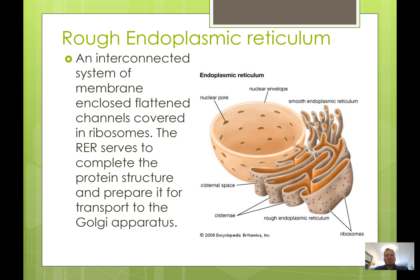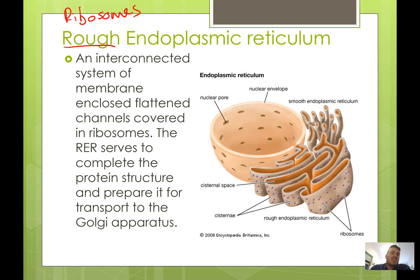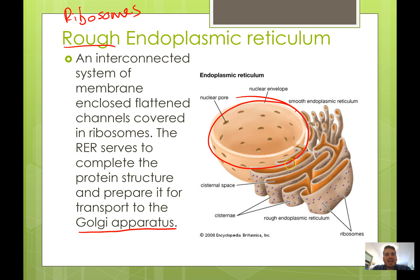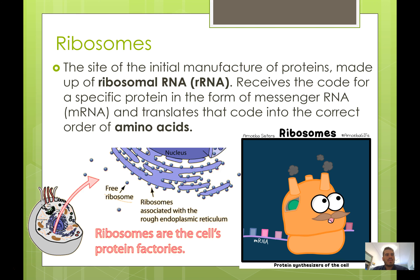Where do these proteins come from? They come from the rough endoplasmic reticulum — 'rough' because it's covered in ribosomes. The rough ER is another membrane-enclosed organelle that's flattened and covered in ribosomes. It serves to complete the protein structure and prepare it for transport to the Golgi apparatus. We find the rough ER right next to the nucleus because the information comes from the nucleus to the ribosomes on the rough ER.